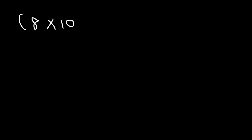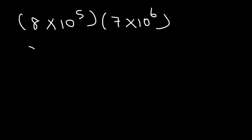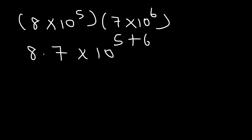Now let's try some harder examples. Let's multiply 8 times 10 to the 5 by 7 times 10 to the 6. First we need to multiply 8 by 7, and just as before we need to add 5 and 6. 8 times 7 is 56 and 5 plus 6 is 11. So we have 56 times 10 to the 11.